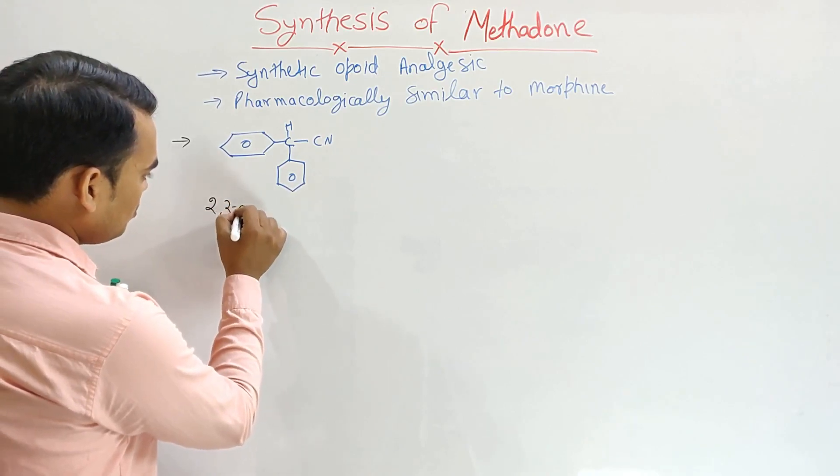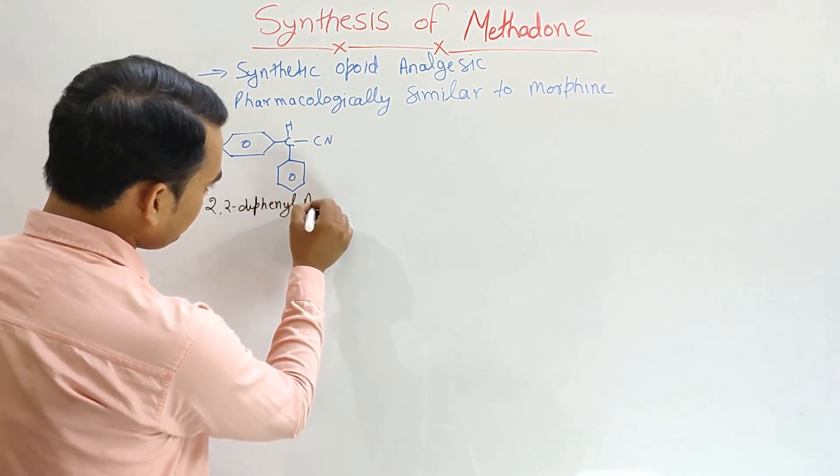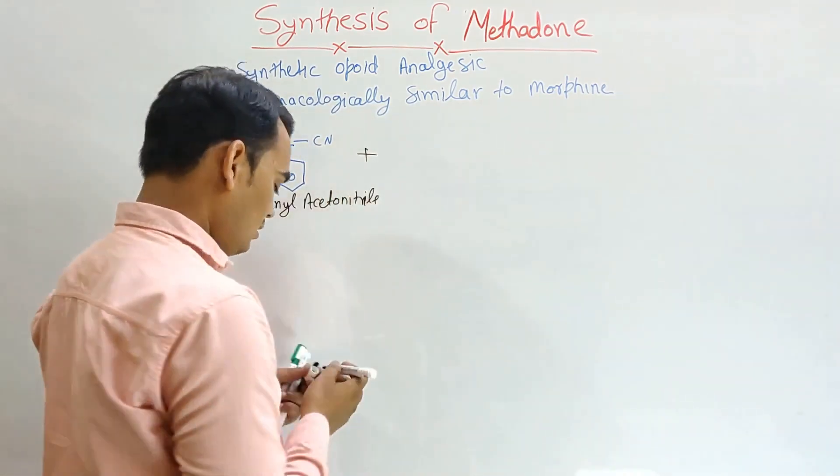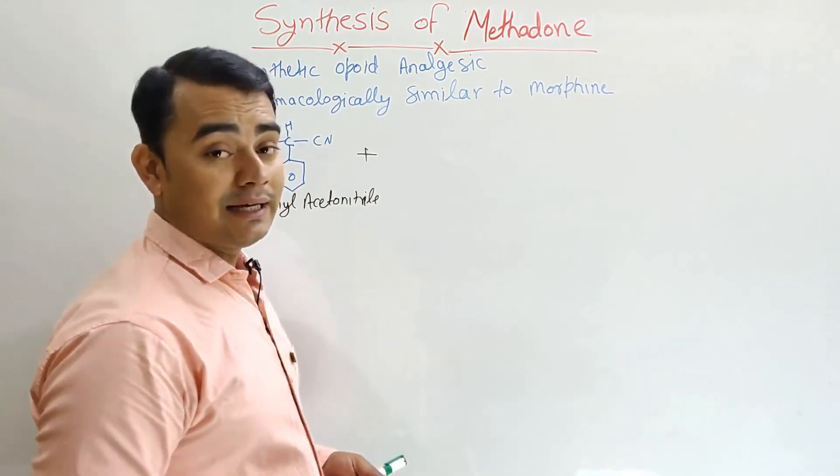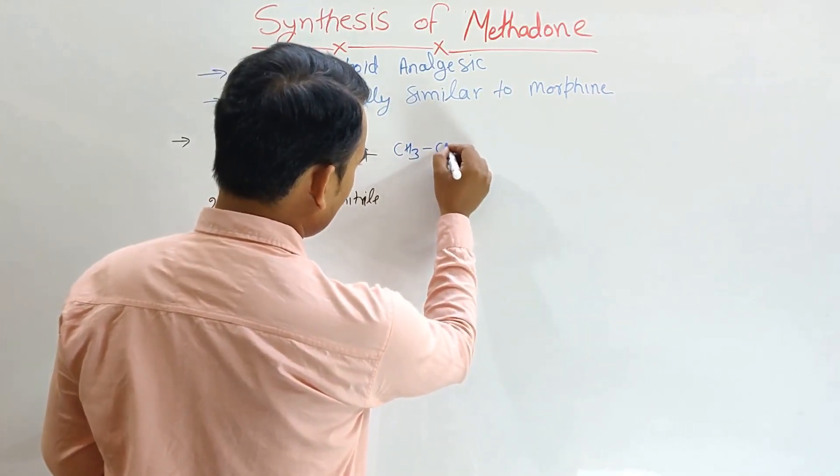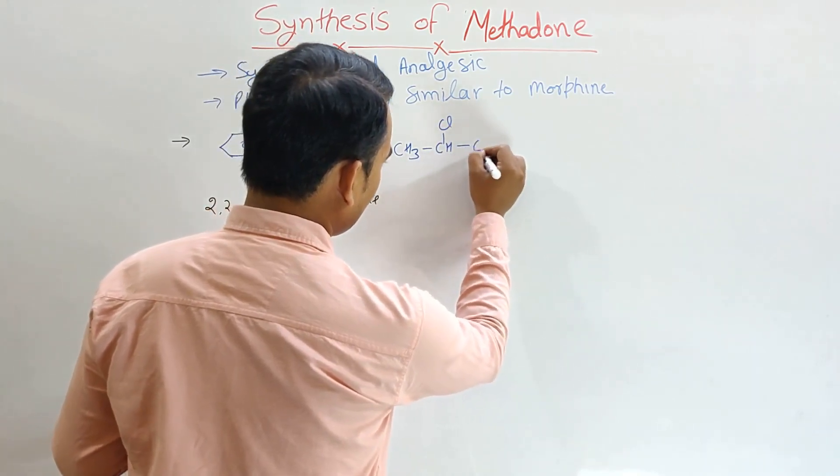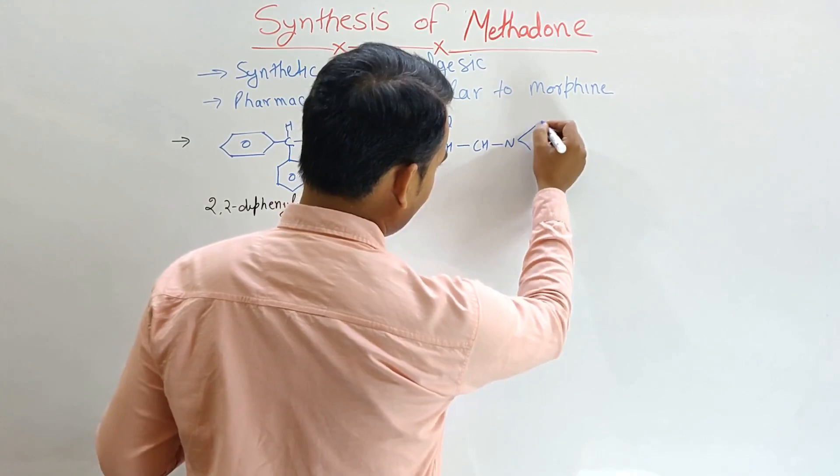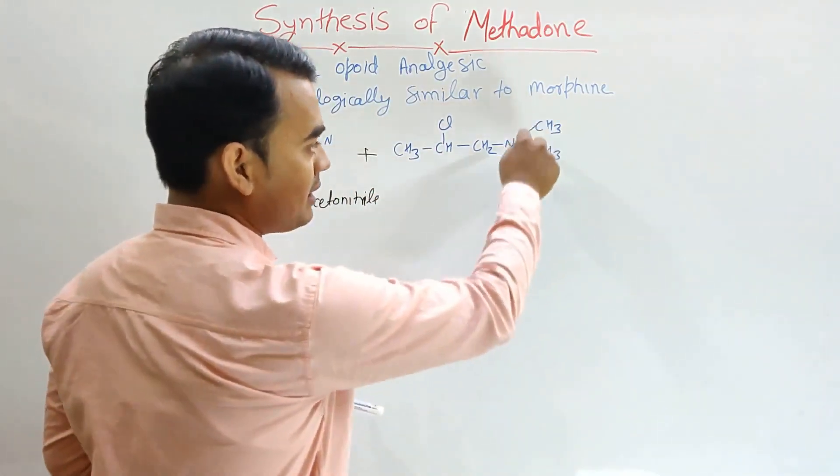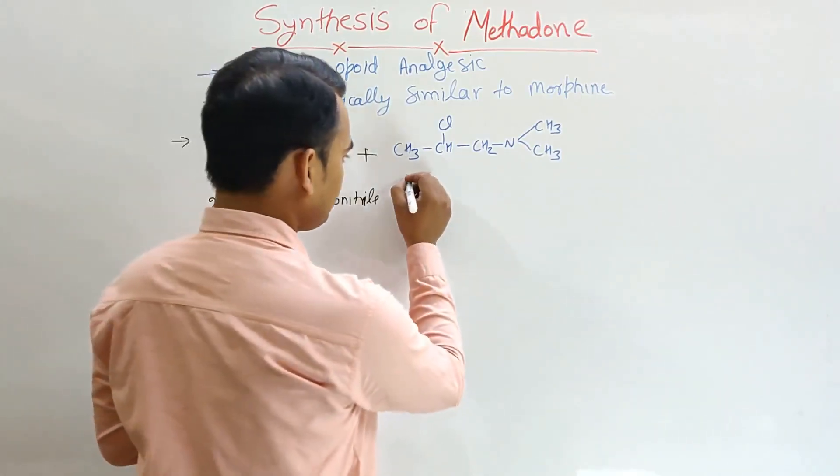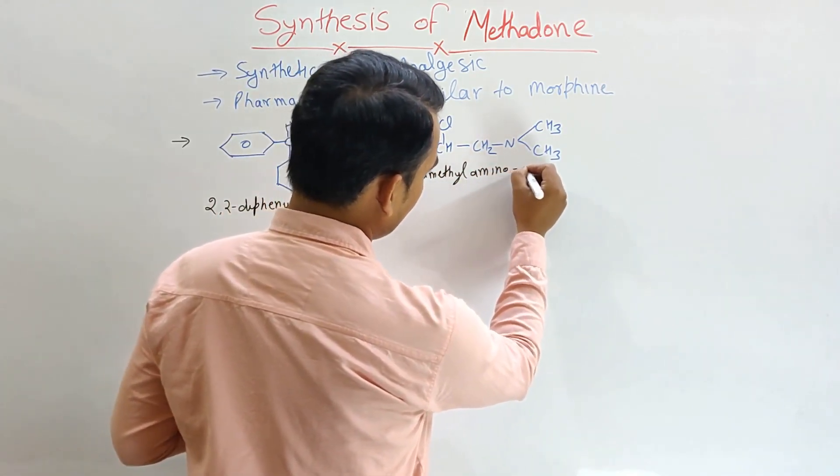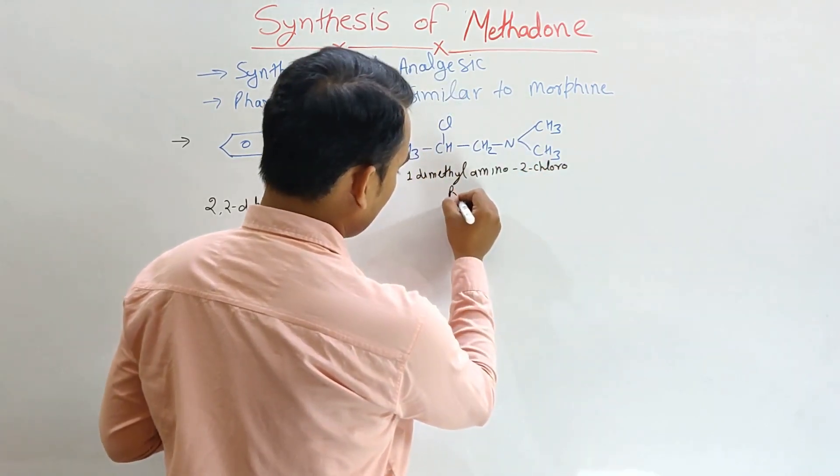2,2-diphenyl-acetonitrile. When this 2,2-diphenyl-acetonitrile reacted with 1-dimethylamino-2-chloropropane, that is CH3-CH3, here chlorine, CH, and it has the CH3 and CH3. So this is 1-dimethylamino-2-chloropropane.